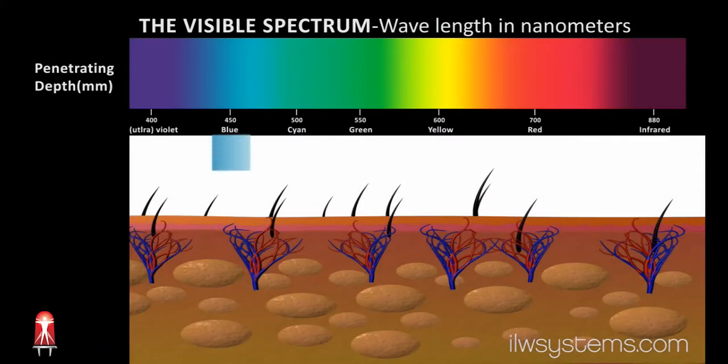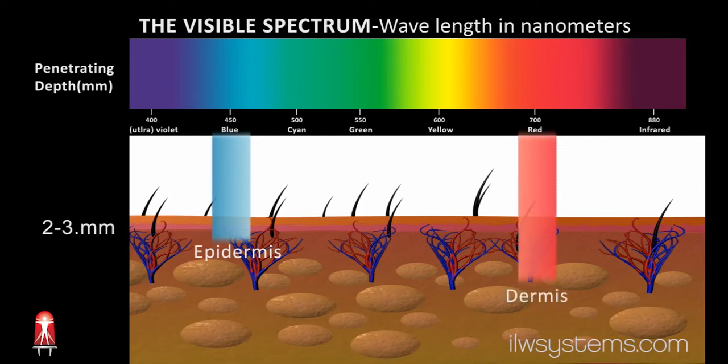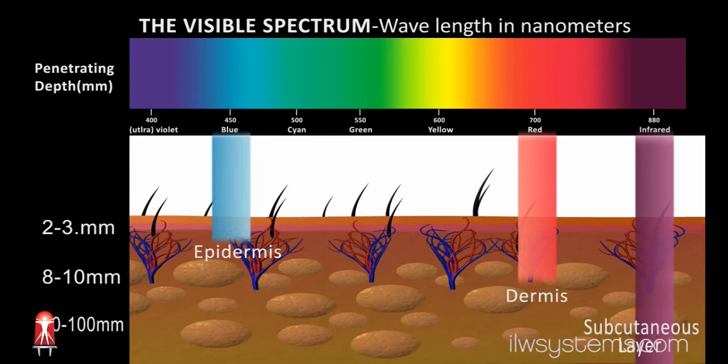Light near the blue end of the spectrum penetrates about 2 to 3 millimeters. Light at the red end of the spectrum penetrates about 8 to 10 millimeters. And near-infrared light penetrates about 20 to 100 millimeters.